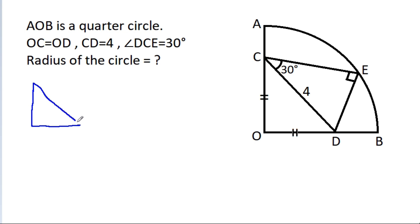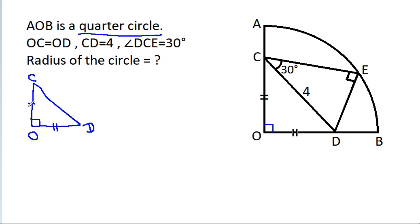In triangle OCD: AOB is a quarter circle, which means this angle will be 90 degrees. Since OD is equal to OC, these two angles will be equal — both 45 degrees. And CD is 4.